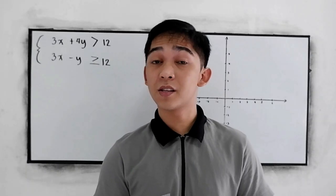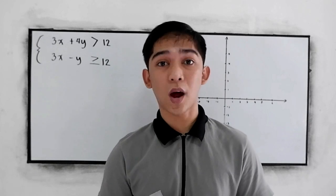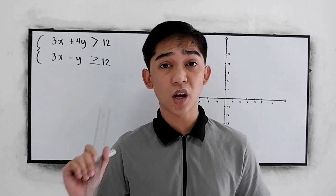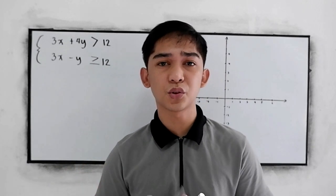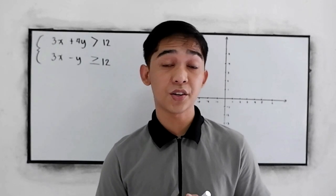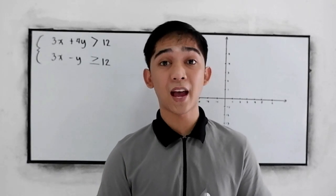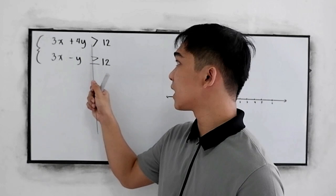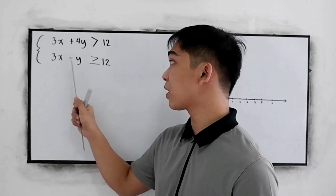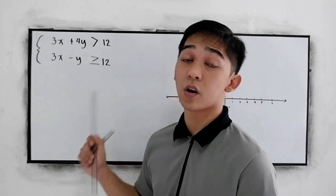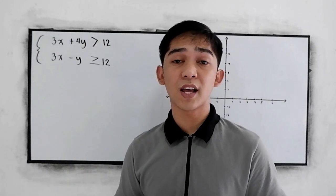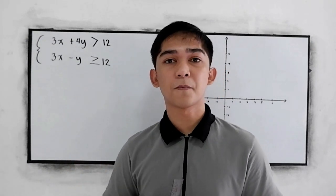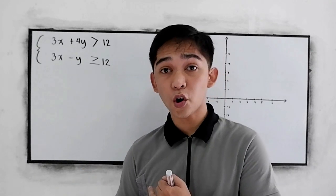For better understanding, we will be discussing graphing of linear inequalities with two inequalities. Make sure you watch our tutorial videos on introduction to linear inequalities and graphing linear inequalities. Now we have: 3x plus 4y is greater than 12, and 3x minus y is greater than or equal to 12. We have methods such as slope-intercept form or intercept form.